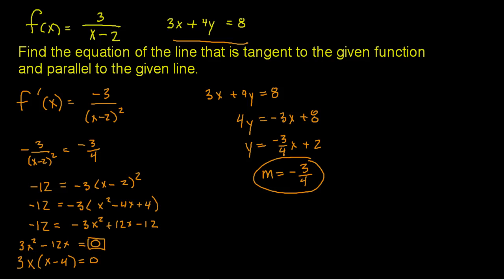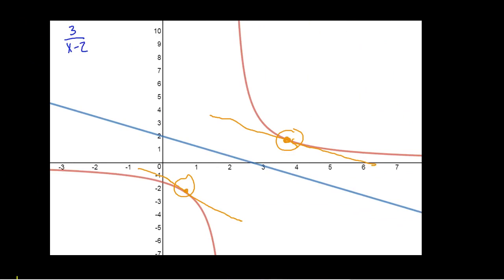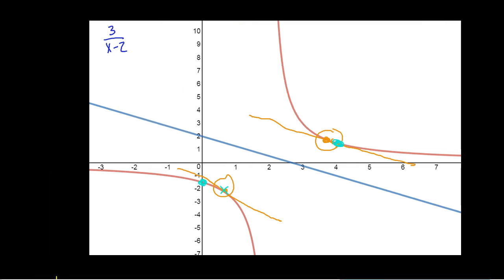Remember, you can only factor when you have a 0 on one side. This allows me to see that there are two possible answers for x. X could equal 0, because if that x is 0 the whole thing is 0. Or x could also be 4, because if x is 4, I get a 0 and the whole thing is 0. So this is what allows me to see my two answers.